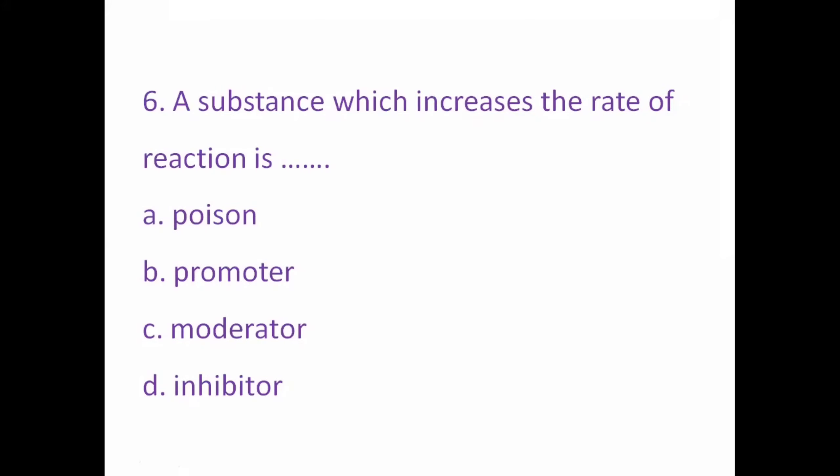A substance which increases the rate of reaction is: A) Poison, B) Promoter, C) Moderator, D) Inhibitor. The right answer is B — promoter. A substance which increases the rate of reaction is called a promoter.